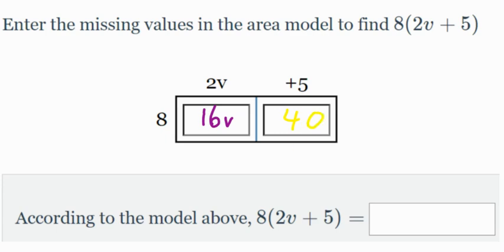So we see now, 16v plus 40. We cannot combine them. They are not like terms. So our answer is going to be 16v plus 40. Plus 40. So again, we find the area of this little rectangle right here, and this little rectangle here. Add them together. That's the whole rectangle. 16v plus 40.